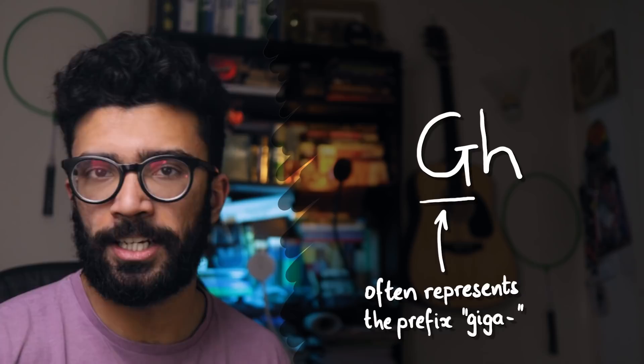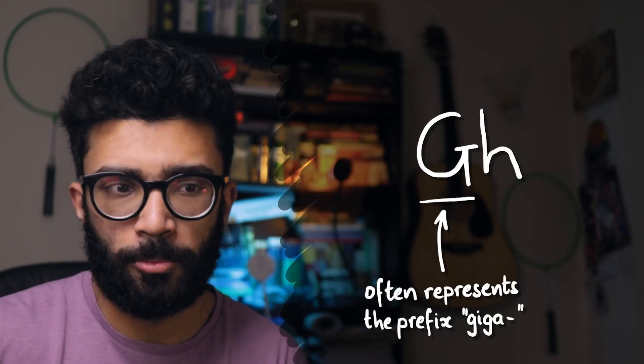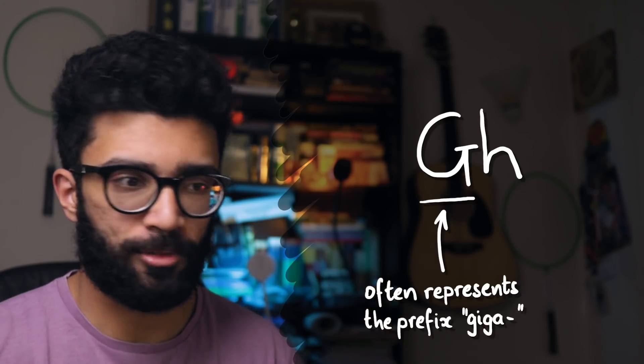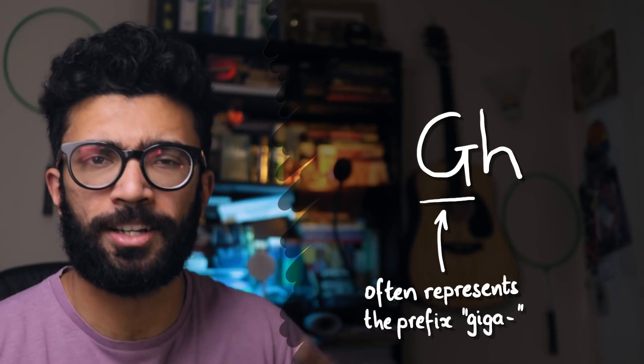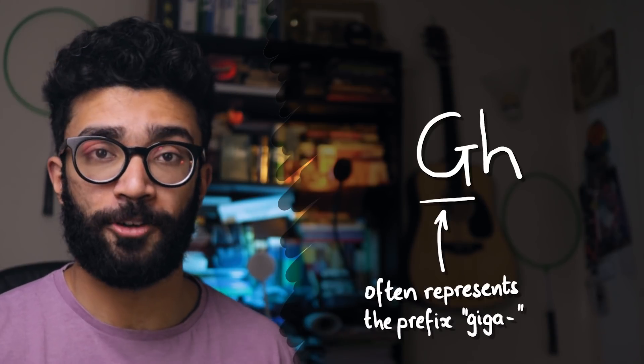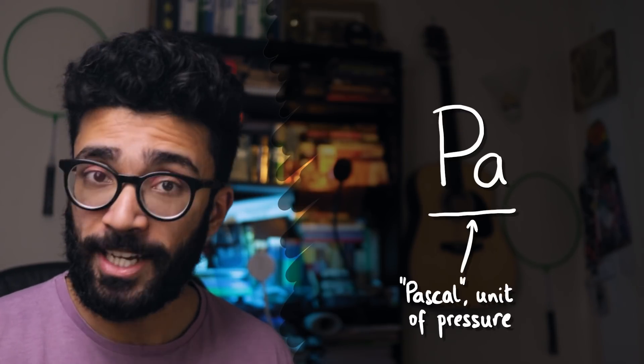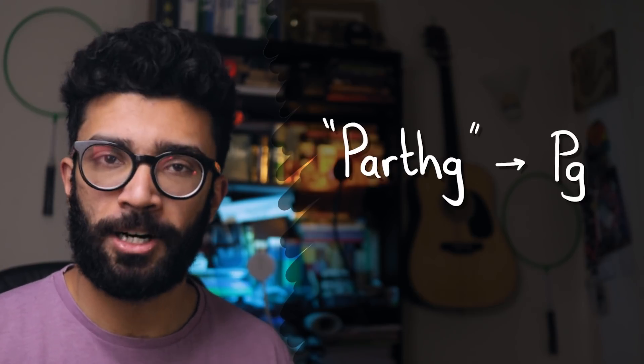The first two letters of my surname are GH. Now, if we use GH as the abbreviation for our unit of momentum, then it might look like we're saying that momentum is given in giga-H, whatever H stands for, because capital G is often used to represent giga, and we're trying to avoid that problem, remember? And if I use my first name, the first two letters of my first name are PA. But PA is already an abbreviation for an SI unit. It's the Pascal. Instead, I propose we create a unit known as the pathG, abbreviated PG.